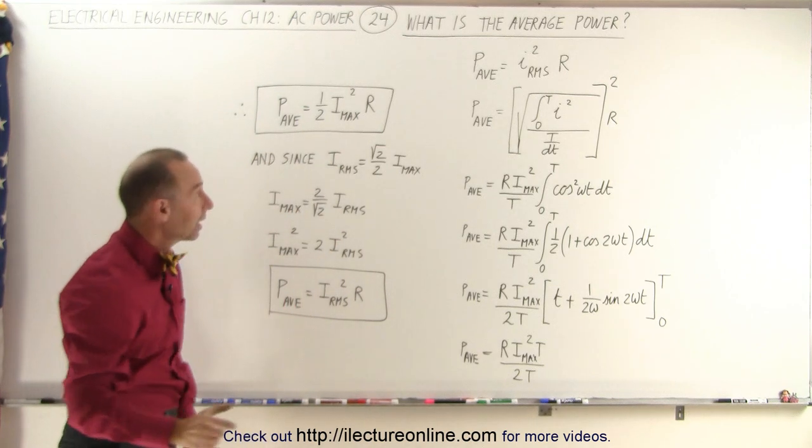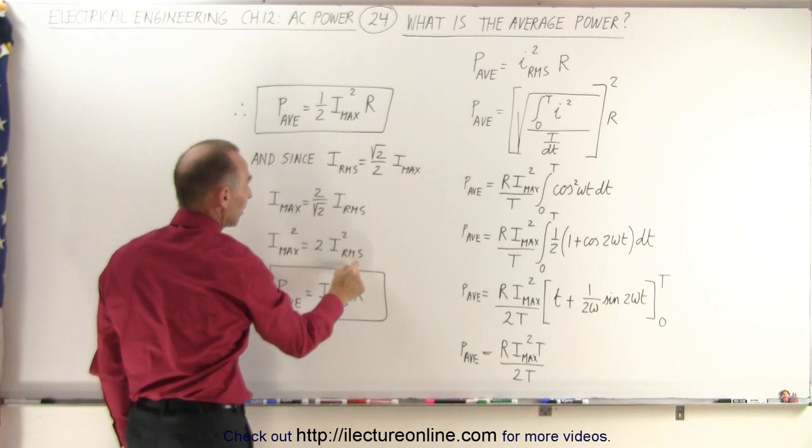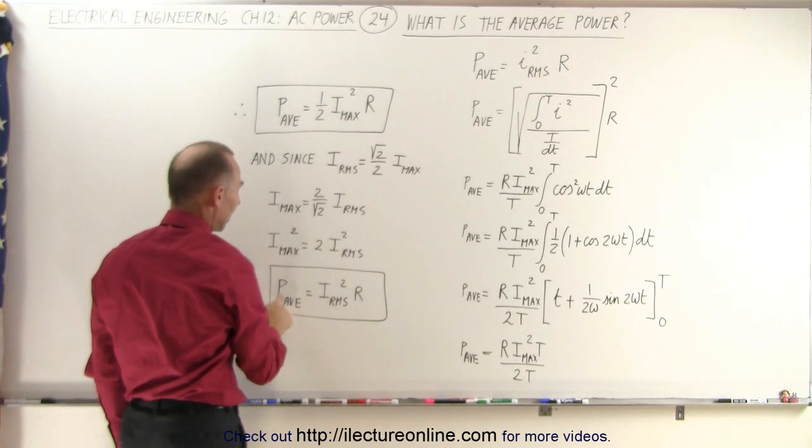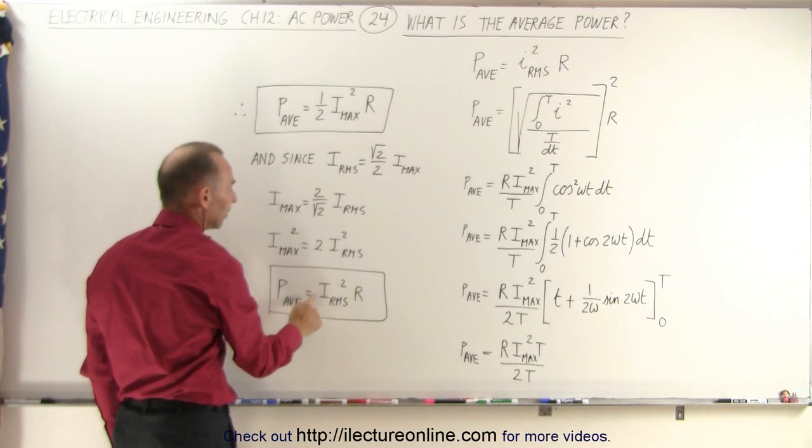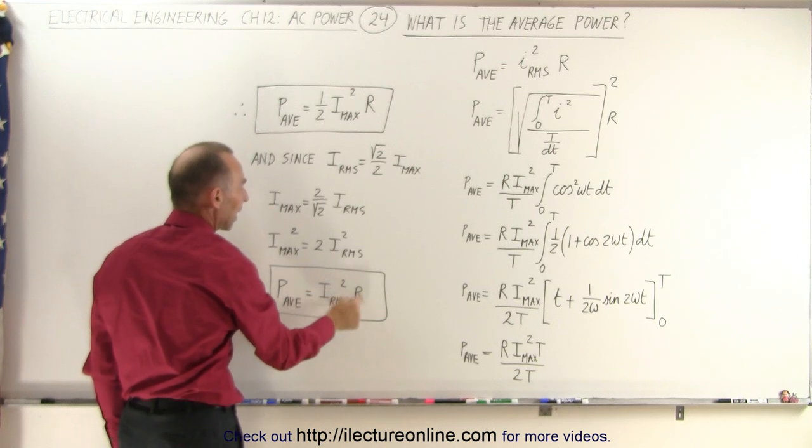And then if we replace I max squared here by twice I RMS squared, the 2s cancel out, and the average power can also be defined as I RMS squared times R.